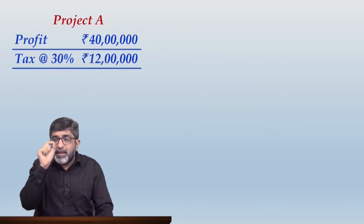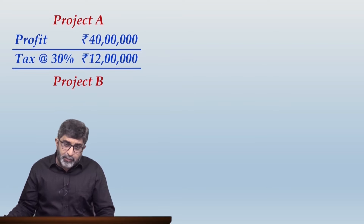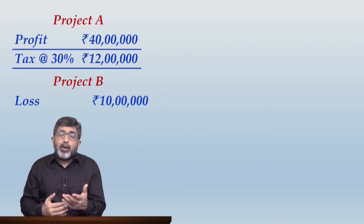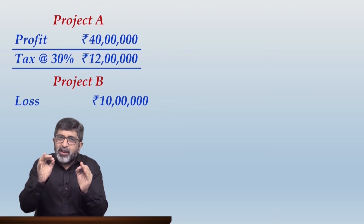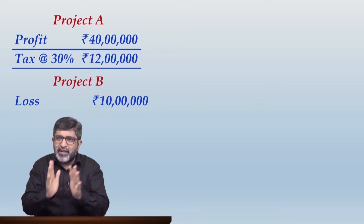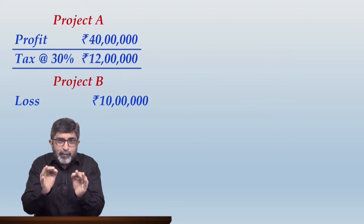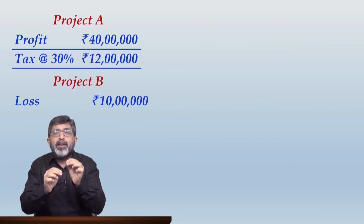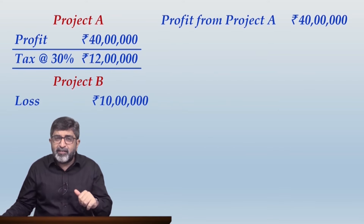Let me explain this through an example. Imagine that there is a project titled as Project A and it is expected to result into a profit of 40 lakhs, and as I said, if the tax rate is 30 percent, the tax liability on the company will be 30 percent of 40 lakhs, that is rupees 12 lakhs. Now if there is another Project B and that Project B is expected to result into a loss of rupees 10 lakhs — what will be the impact? As per income tax law, one company having two separate lines of business — business A and business B, or project A and project B from a capital budgeting viewpoint.